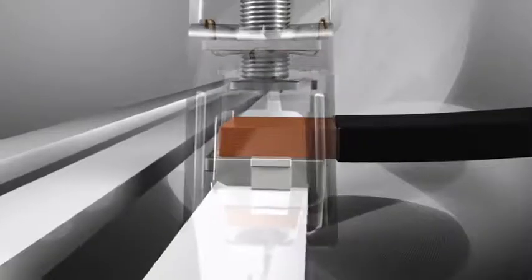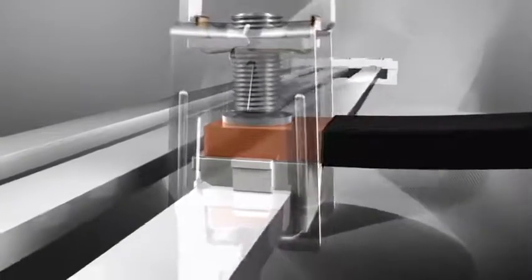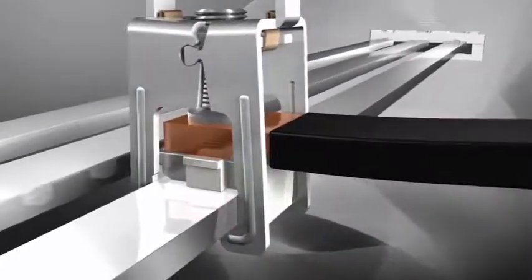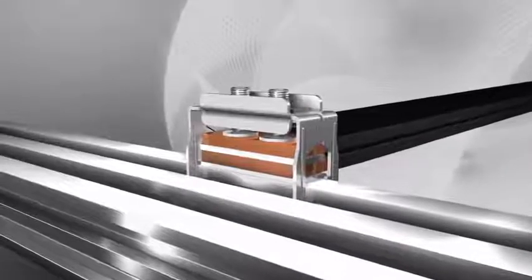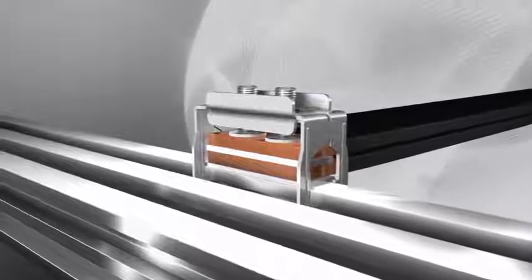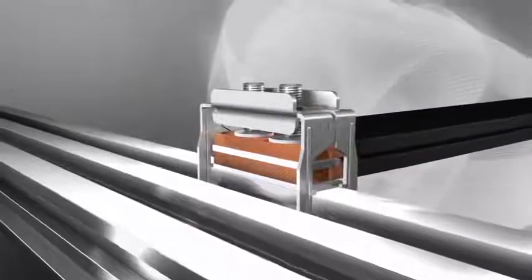Flat conductors of different cross sections can be conveniently connected with the Kritto ProfiClip. The Kritto PowerClip can even securely connect two flat conductors simultaneously to the bus bar system.